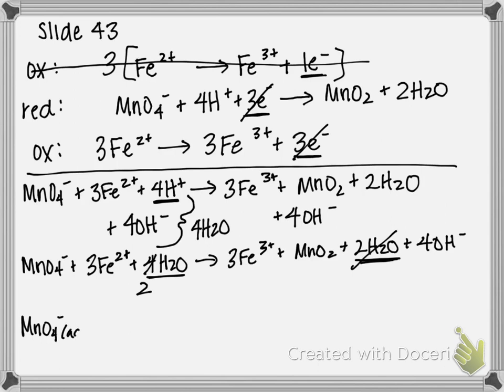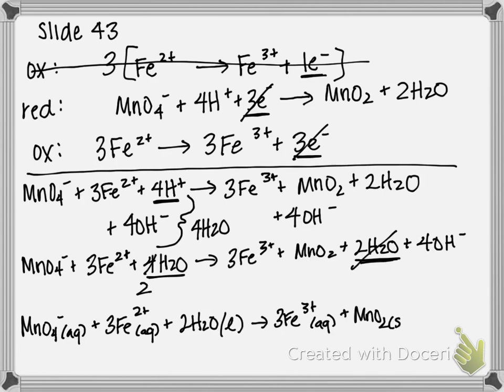MnO₄, which is aqueous, plus 3 Fe²⁺ aqueous, plus 2 H₂O, which is a liquid, produces 3 Fe³⁺ aqueous, plus MnO₂ plus 2 H₂O plus 4 OH⁻, which is aqueous, and that is your final balanced equation answer. So, a little bit more complex, but overall relatively same steps.